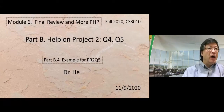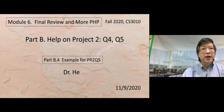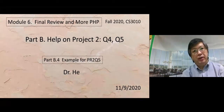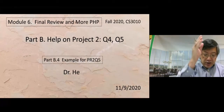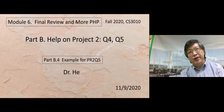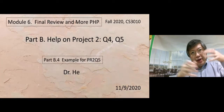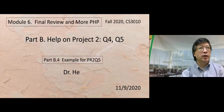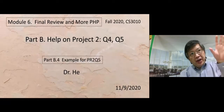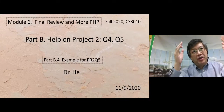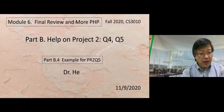This is the last video of Part B, help on project 2 sequence, B.4. This is an example for PR2Q5. I created an example very close to question 5 of project 2. You can use the method we use here, but you need to make some small changes to get question 5. Let's start.